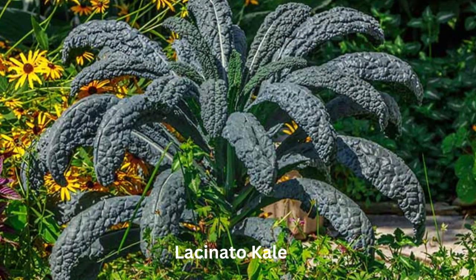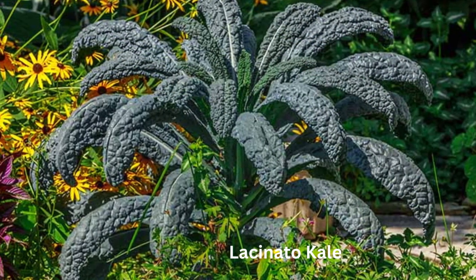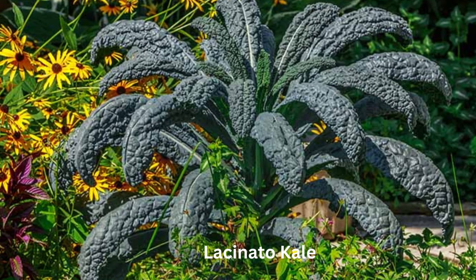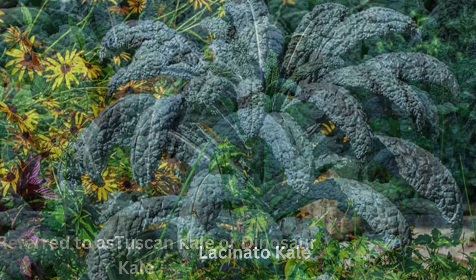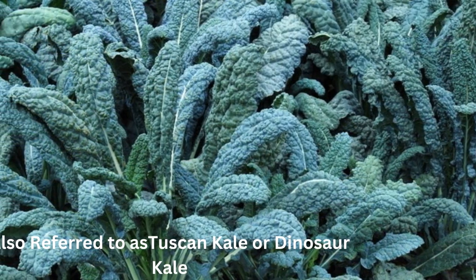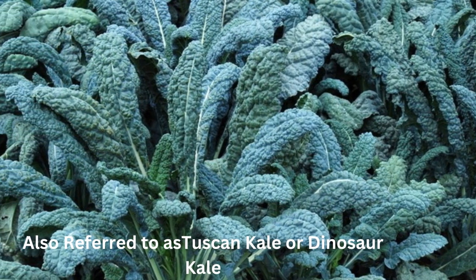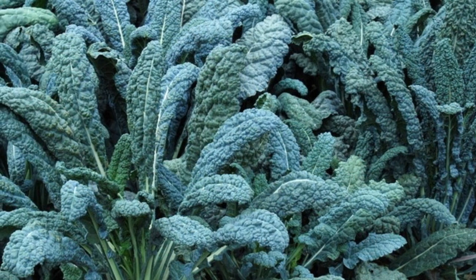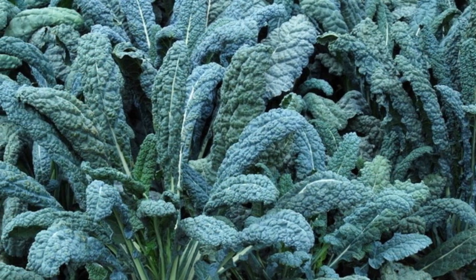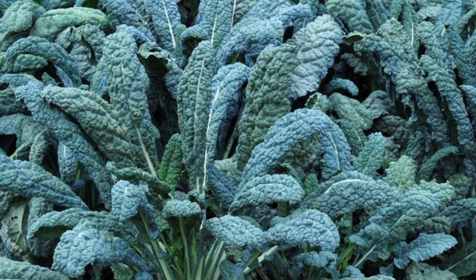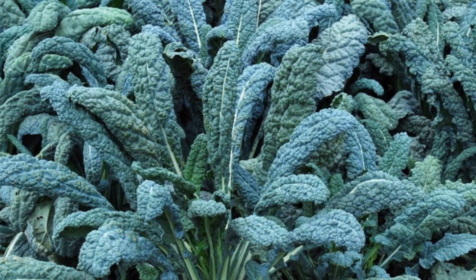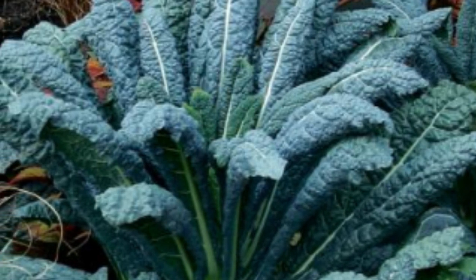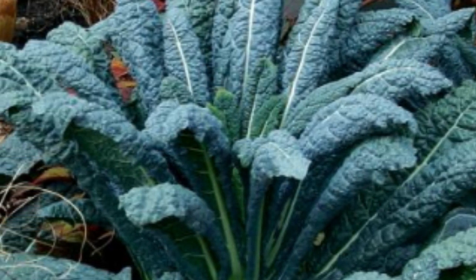Number 2: Lacinato Kale. Lacinato kale has long, slender leaves that are dark green or bluish-green in color. The leaves are distinctively wrinkled, with a texture that resembles the rough skin of a dinosaur, giving it the nickname dinosaur kale. Unlike curly kale, lacinato kale has a flat leaf structure with a pronounced central vein. It has a slightly sweeter and milder taste compared to curly kale, and can be lightly cooked or added to soups, stews, stir-fries, and pasta dishes.